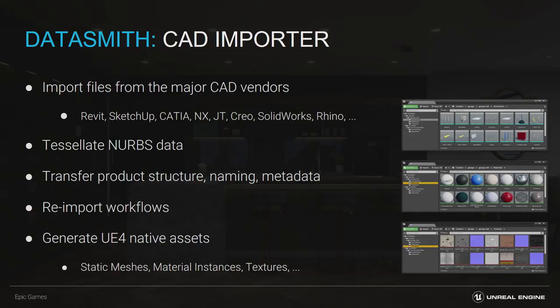Our CAD importer with the Datasmith plugin is more than just a simple CAD importer — it takes care of all the pain points behind the scenes. It imports files from all the major CAD software, handles the conversion and tessellation of complex surfaces or NURBS data, and transfers over all the product structure, naming conventions, and metadata, preserving that accurately as the designer would expect. The reimport workflow is also great — just right-click and simply reimport if a design changes on one or several components, and it will preserve its position and proportion within its space in Unreal Engine. It also generates Unreal Engine native assets automatically behind the scenes.